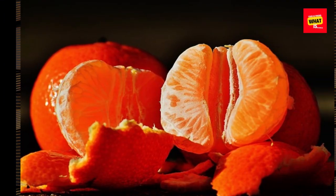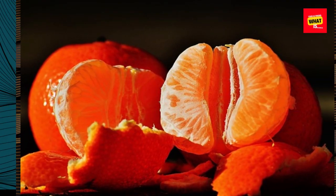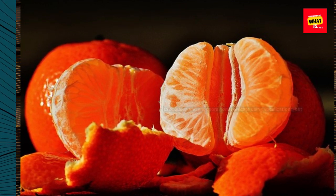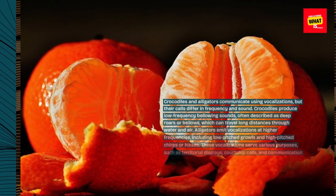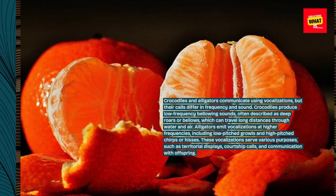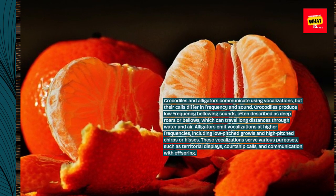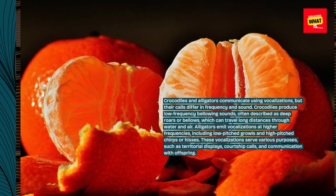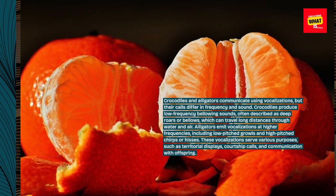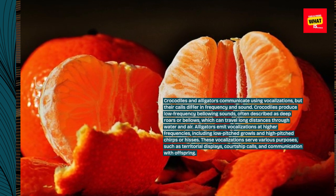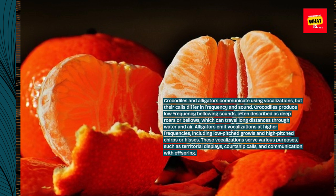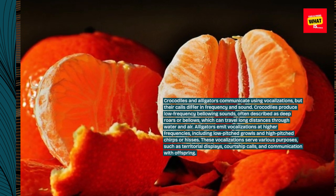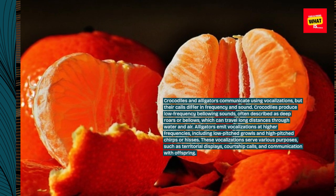Vocalizations: Crocodiles and alligators communicate using vocalizations, but their calls differ in frequency and sound. Crocodiles produce low-frequency bellowing sounds, often described as deep roars or bellows, which can travel long distances through water and air. Alligators emit vocalizations at higher frequencies, including low-pitched growls and high-pitched chirps or hisses. These vocalizations serve various purposes, such as territorial displays, courtship calls, and communication with offspring.